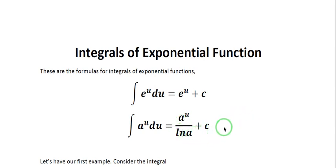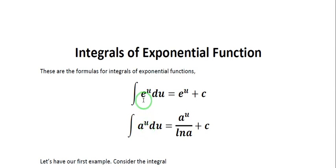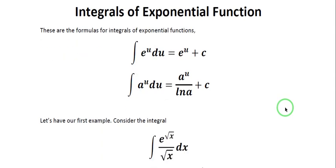Remember that in e to the u and a to the u, both e and a are the base of the exponential functions. However, e is a fixed constant value, while a here is any constant value. That's the difference between a and e.